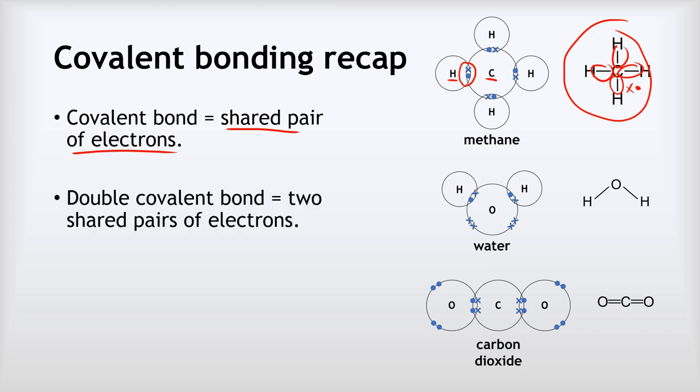We can also have double covalent bonds as well, where we have two pairs of electrons in the overlapping parts of our outer shells and we can represent that like this. So that's not an equals sign, each of those lines represents or each of those double lines is that double covalent bond.